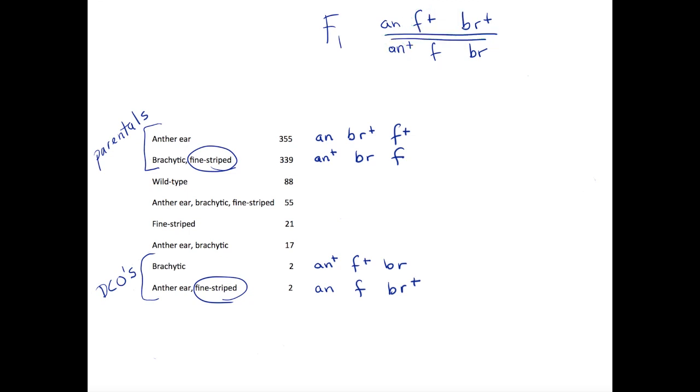We are now ready to determine the map distances between the middle gene and each of the two flanking genes. This step should be familiar from solving problems involving two genes. For each calculation, we will look at two genes at a time and ignore the third one.